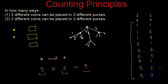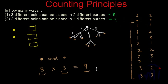So the answer for the first question is eight — there are eight different ways in which three coins can be placed into two different purses. And there are nine options possible for two different coins to be placed in three different purses. This was one of the basic examples for the counting principles. After this we are going to take a slightly trickier problem based on the same counting principles. Keep watching MathSmart — bye-bye till then.